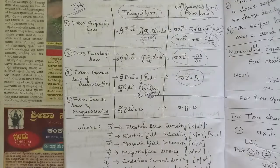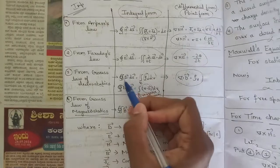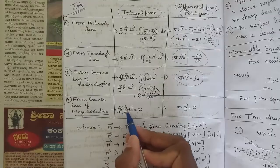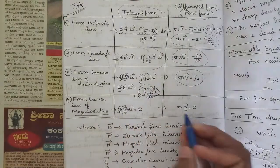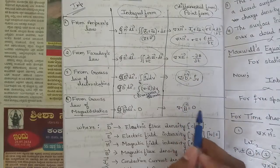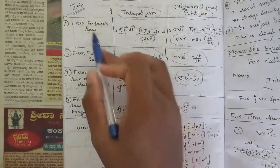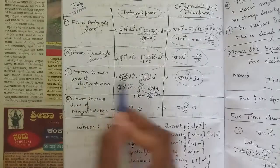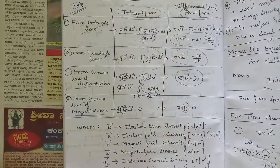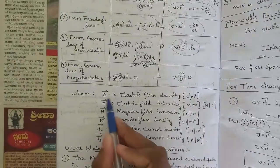For magnetostatics, we nullify the charge term. Replace electric flux density with magnetic flux density: the surface integral of B·dS = 0, and the corresponding point form is del·B = 0. So these are the four sets of equations from Ampere's law, Faraday's law, Gauss's law for electrostatics, and Gauss's law for magnetostatics, in both integral and point forms.